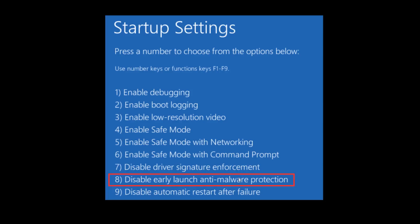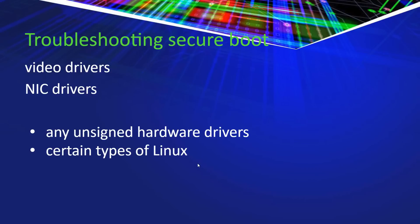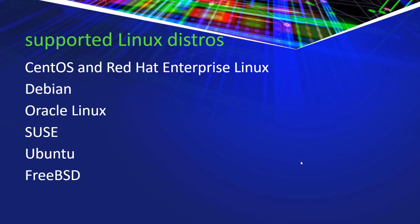In startup settings, you can disable the Early Launch Anti-Malware protection driver. So if you're having problems with it — for example, if you think it's causing a video driver to go south — you can go in there and disable it. Your big troubleshooting problems with Secure Boot are going to be drivers: a video driver, a NIC driver, anything that's unsigned. There are certain types of Linux that will also have problems with Secure Boot. The supported Linux distros for Secure Boot are as follows.